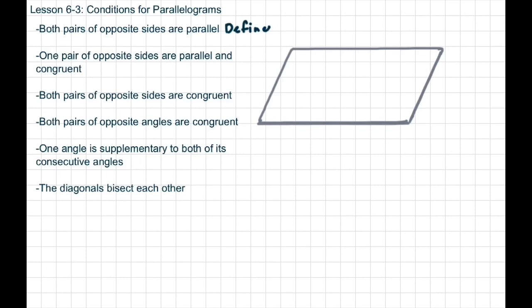The next one says that one pair of opposite sides are parallel and congruent. So if I'm looking at the parallelogram here off to my right, it could be these two sides — they're opposite from each other and they could be parallel and congruent — or it could be these two sides. But it has to be at least one pair, and if at least one pair of opposite sides are parallel and congruent, then that means it's a parallelogram.